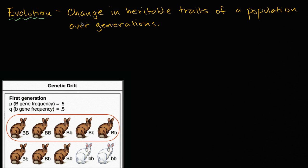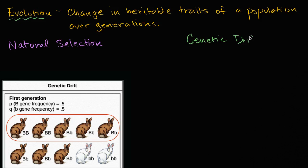We've already made several videos on evolution. To remind ourselves, evolution is the change in heritable traits of a population over generations. A lot of times you'll hear people say evolution and natural selection in the same breath. But what we want to make clearer in this video is that natural selection is one mechanism of evolution — it's the most talked about because it is viewed as the primary mechanism. But we're also going to talk about another mechanism called genetic drift.